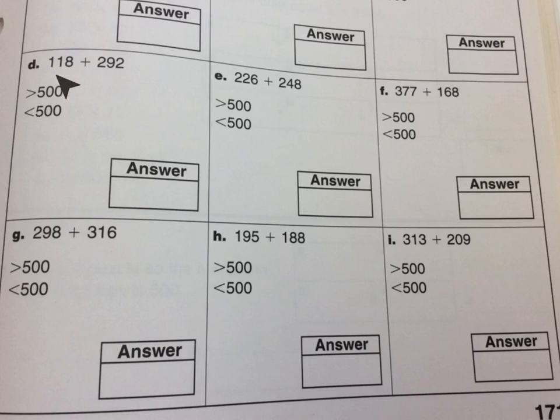Down here, D, this is about 100, this is about 300. So together, this is about 400, which means it's less than 500. So I can circle that and move on to the next one.